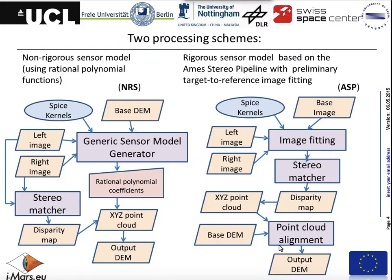In this assessment we were using two different schemes. One is based on a non-rigorous sensor model without using SPICE kernels, though we do use SPICE kernels for initial data processing. Another is based on the AMIS stereo pipeline, and we were comparing these two approaches to see which is working better. In the first, we use a non-rigorous sensor model creating polynomials to adjust images with each other and with the reference DTM.